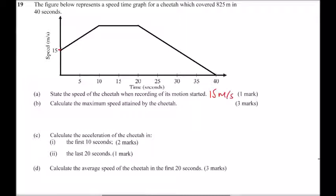Part B: calculate the maximum speed attained by the cheetah. To get the maximum speed, we use the fact that the area under the graph represents the distance covered. We can call this unknown height h. We already know the total area is 825, and this base value is 15. From one point to another it is 10, so we have two trapeziums.